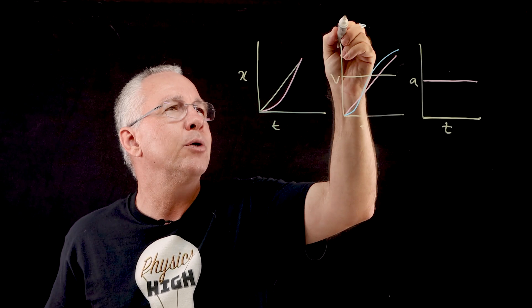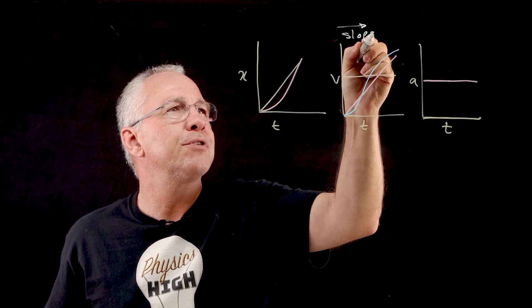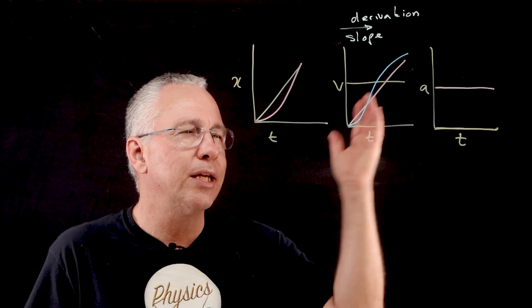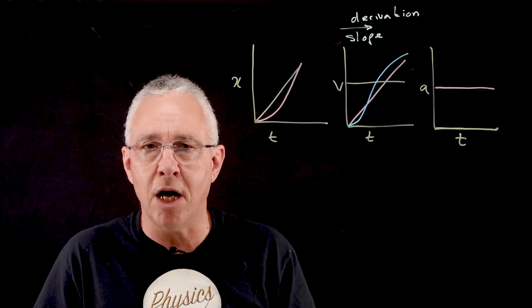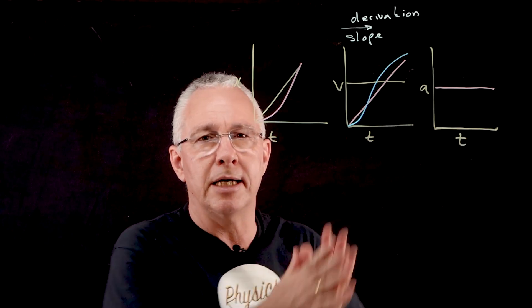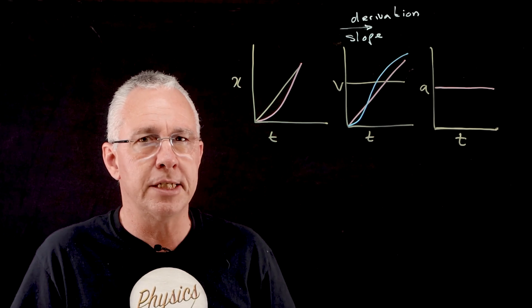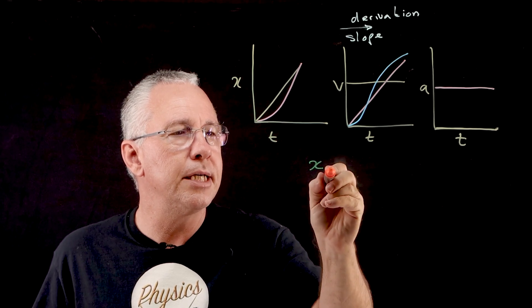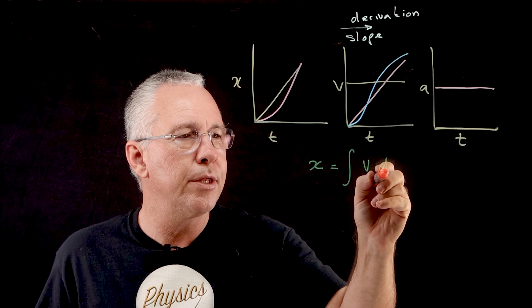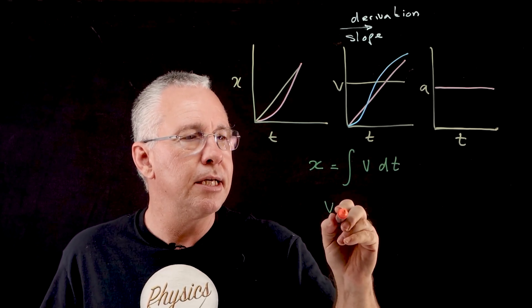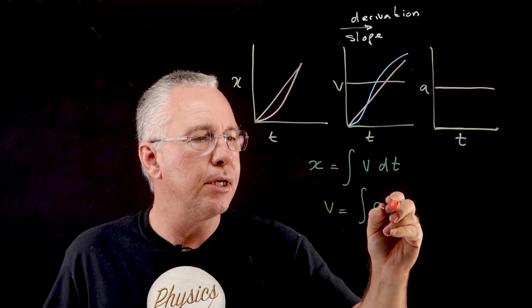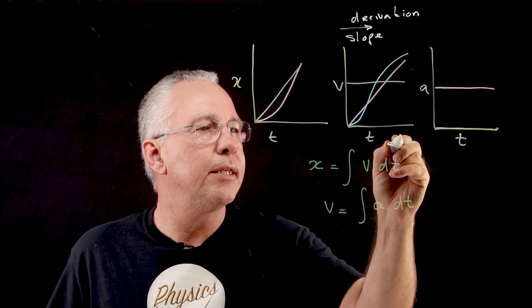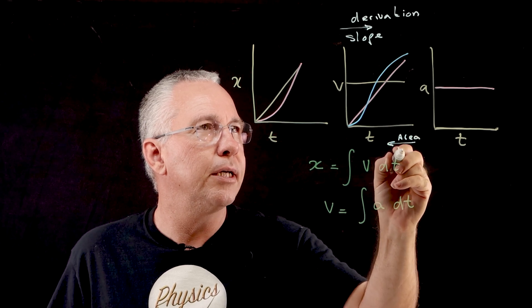If we go in the direction of looking at slopes, we are doing differentiation. But can we go in reverse? You would have learned in high school that the area underneath a velocity-time graph gives us the displacement. Similarly, the area under an acceleration-time graph gives us the velocity — and that is of course integration. So the displacement equals the integral of velocity with respect to time, and velocity equals the integral of acceleration with respect to time.